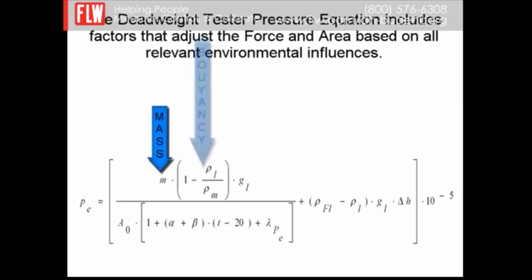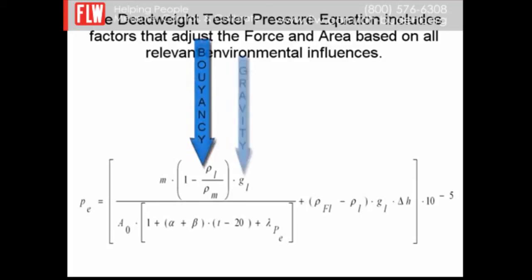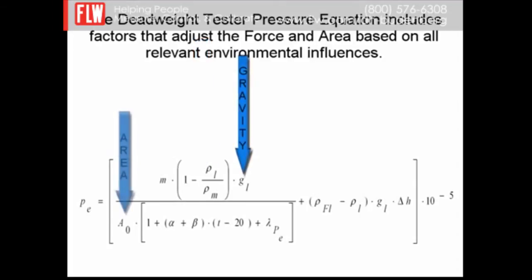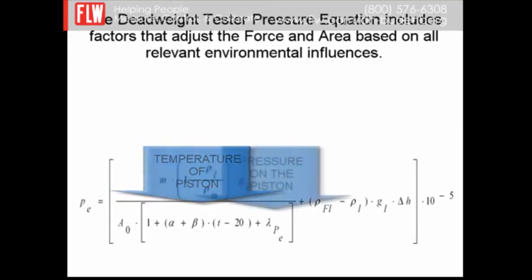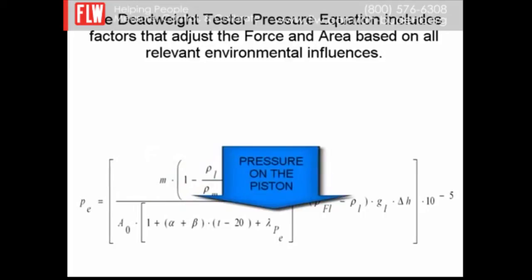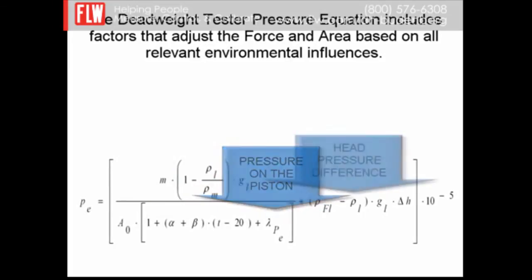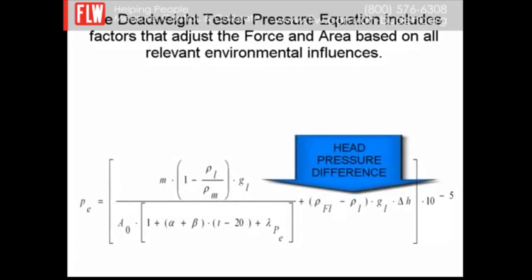These factors include mass, buoyancy, gravity, area of the piston, temperature of the piston, pressure on the piston, and even an adjustment for the head pressure difference between the device under test and the dead weight tester.